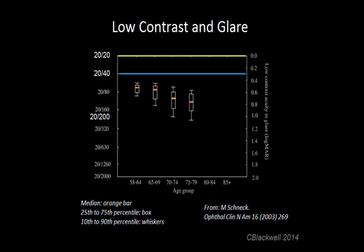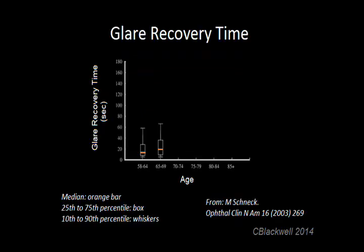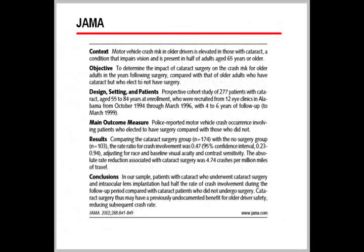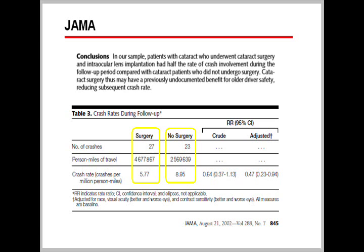This graph shows how lower contrast sensitivity and glare combine to reduce vision. It looks relatively innocent with a gentle downslope, until you notice the vision levels on the scale on the left — the average starts near 20/80 and ends at 20/200, the standard for legal blindness. Note also how much longer glare recovery becomes with age. One study has shown that cataract removal improved both acuity and contrast sensitivity and reduced the accident rate by 50%, compared to an age-matched group who did not have cataract surgery.